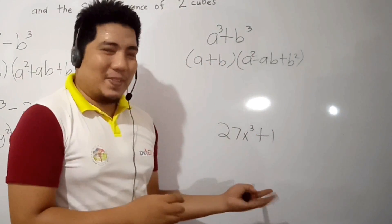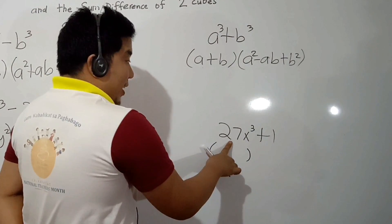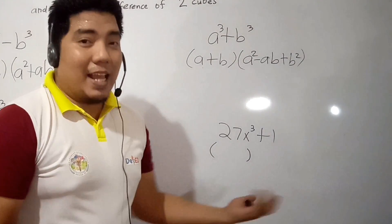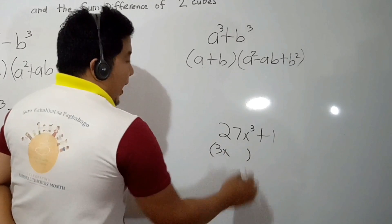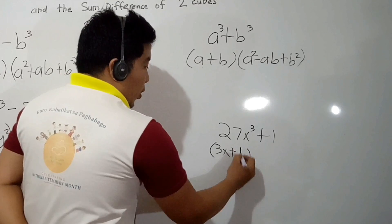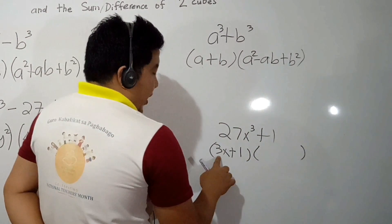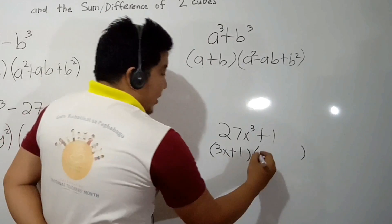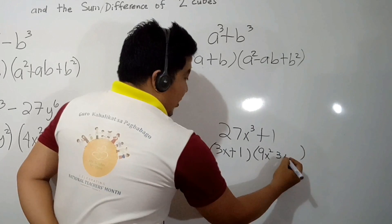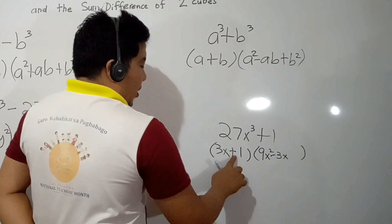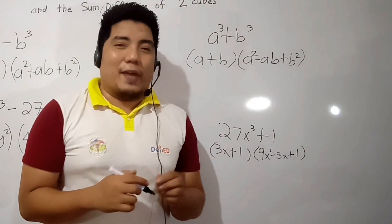Easy, right? Now let's go to 27x cubed plus 1. For our first step, we make a small quantity. The cube root of 27 — what number multiplied by itself 3 times gives 27? The answer is 3. Then x cubed: the cube root of x cubed is x. We copy the plus. The cube root of 1 is still 1 because 1 times 1 times 1 is 1. Now for the second quantity: 3x times 3x is 9x squared. We multiply them together to get 3x. However, the sign should be minus because it is opposite of the plus. And finally we have plus, and 1 squared is 1.